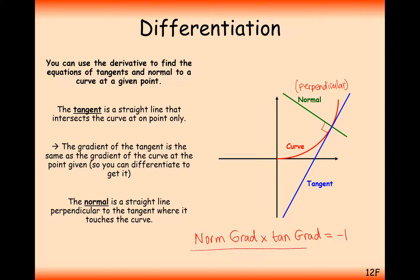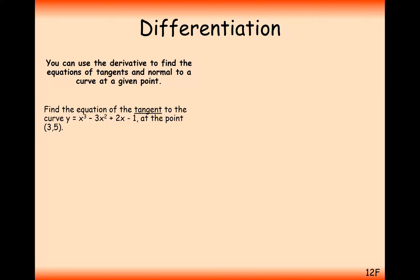This is going to be really important for this video. Let's have a go at a question now. We'll do one tangent and one normal question. Find the equation of the tangent to the curve y equals x cubed minus 3x squared plus 2x minus 1 at the point (3, 5).